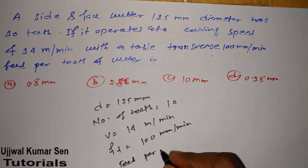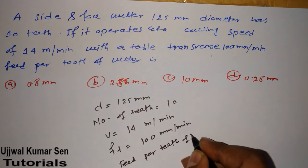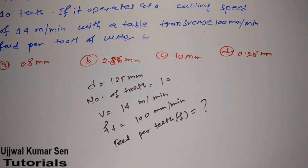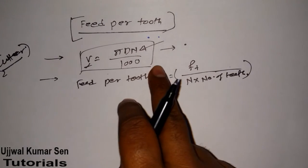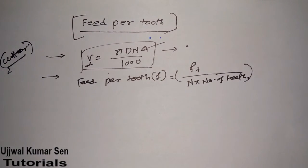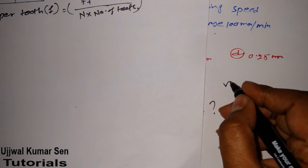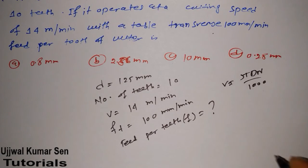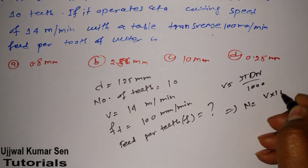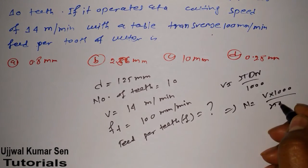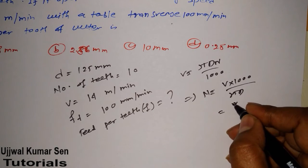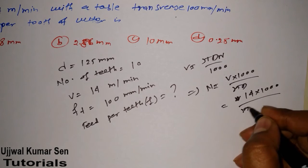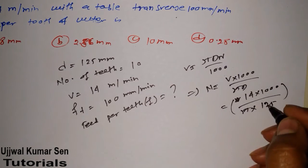What formulas have I shared with you? We have two formulas. V equals pi DN by 1000, so N equals V times 1000 divided by pi D. V is 14 into 1000, and D is 125. Don't need to change units because the unit has already been adjusted after multiplying by 1000.